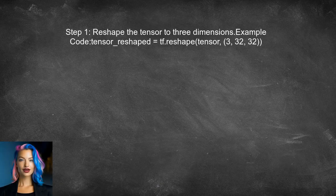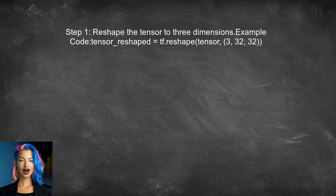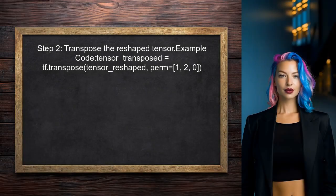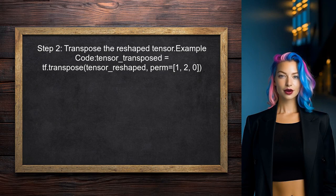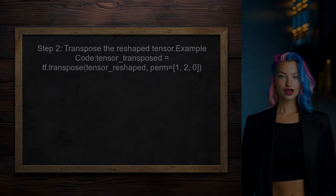To reshape a tensor in TensorFlow using Fortran order, the user can start by reshaping the tensor to the desired dimensions. In this case, the user should reshape the tensor to three dimensions: 3, 32, and 32. Next, the user needs to transpose the reshaped tensor. This step is crucial because it will rearrange the dimensions to match the Fortran order, which is column-major.